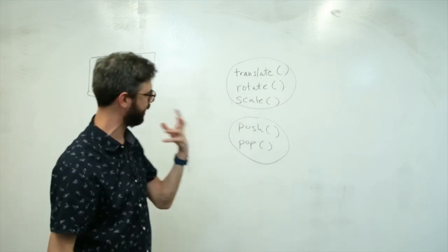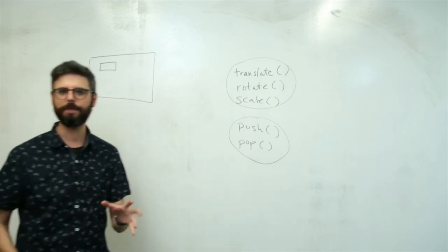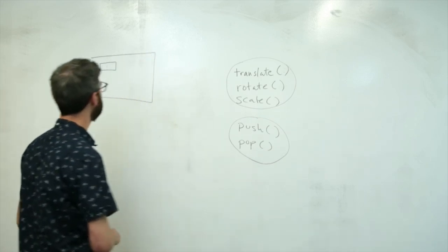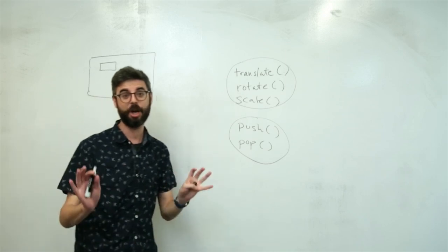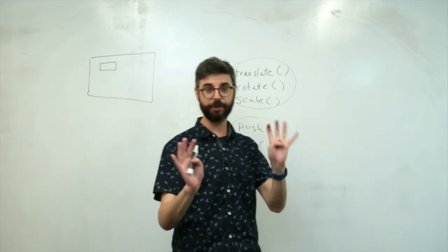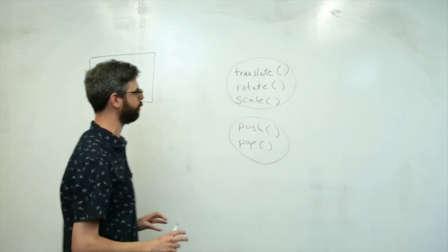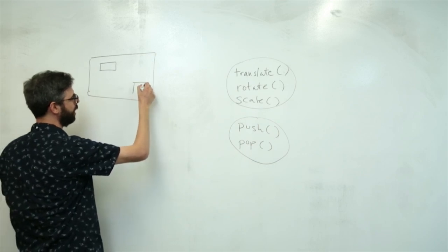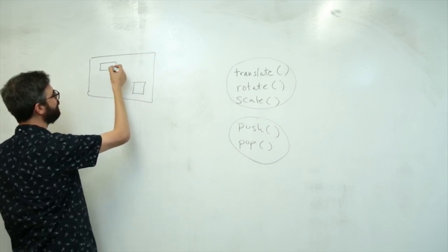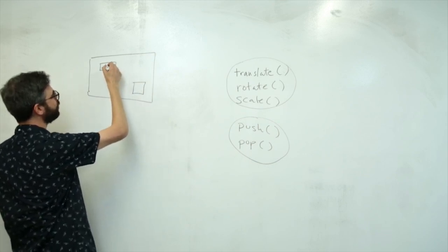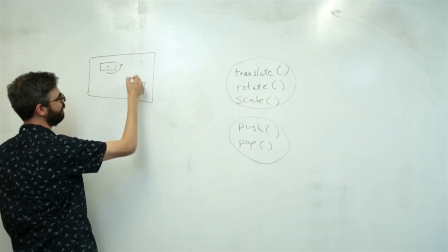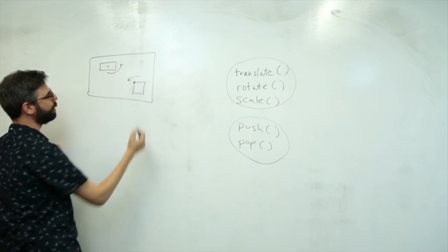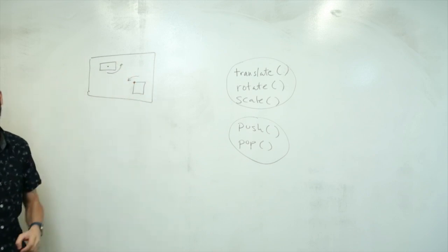It's not so hard, but it is a little tricky at first and a little confusing what these things do. So the goal for this first video about transformations is: I want to have two rectangles, and I want them each to rotate — maybe this one rotates around its center, and maybe this one rotates around its corner, and they both rotate in opposite directions independently of each other.